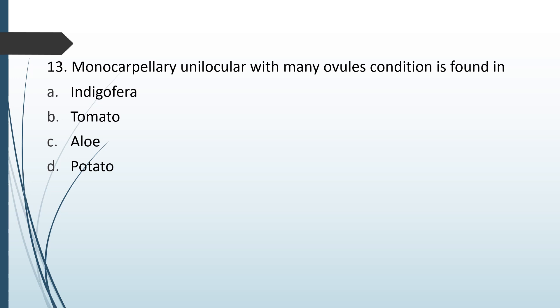Monocarpillary unilocular with many ovules condition is found in: Indigofera, tomato, aloe, or potato. The correct answer is option A — Indigofera.